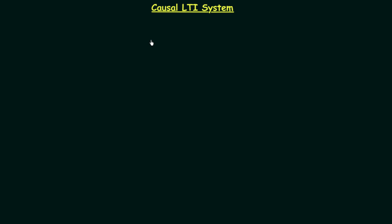Here we are dealing with a system having the properties of three types of systems: the first one is causal system, the second one is linear system, and the third one is time-invariant system. Whenever the impulse response or transfer function is given, we already know the given system is a linear time-invariant system because impulse response and transfer function are only defined for LTI systems. So whenever impulse response or transfer function is given, we only have to focus on the causal characteristics of the given LTI system.